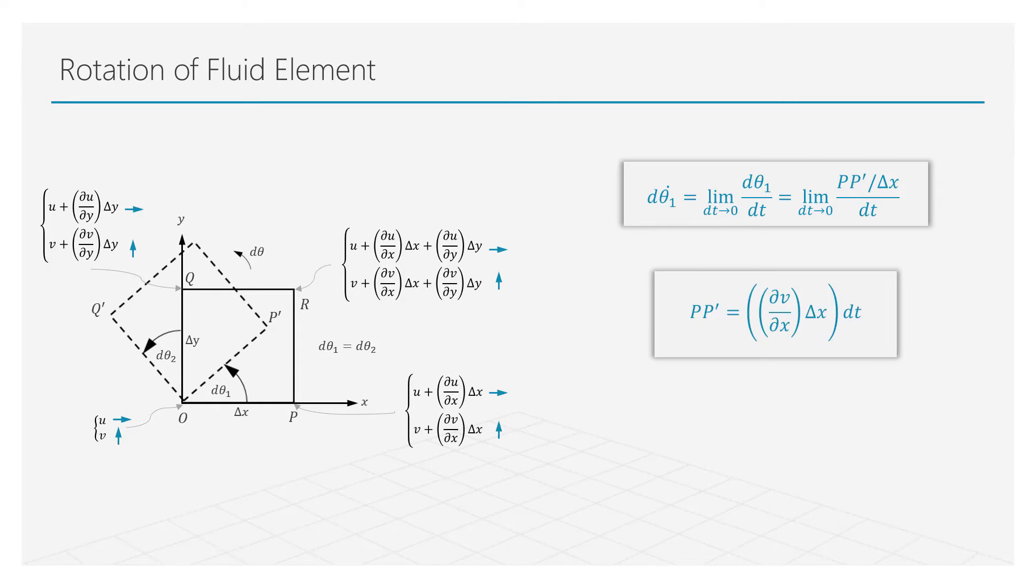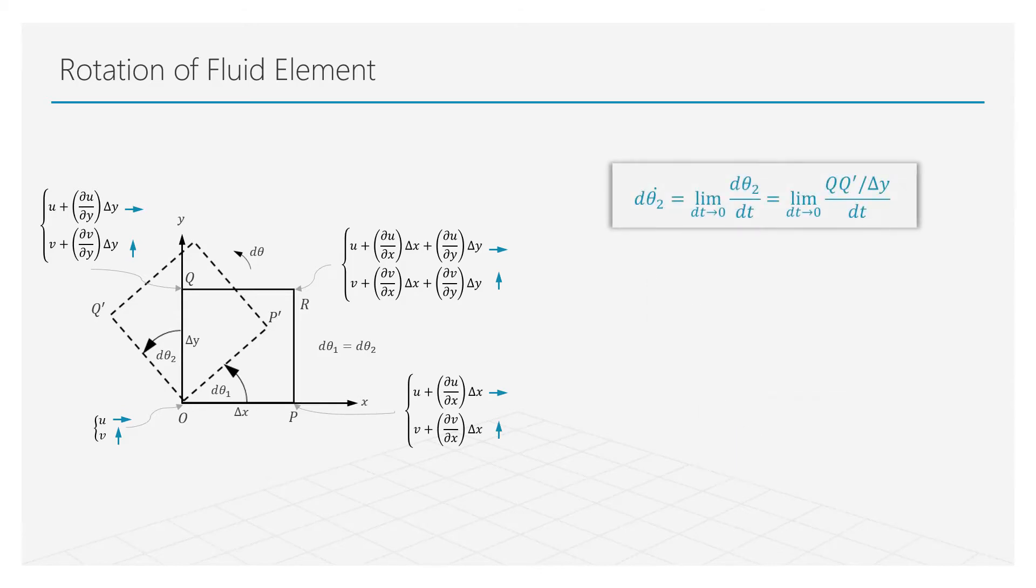As displacement occurs from p to p prime over a small time dt, we can write this displacement p p prime using the p component of velocity. When we replace p p prime, we obtain the final value of deformation per unit time for d theta 1. In a similar manner, displacement q q prime can be written for small time dt. Following a similar approach, we can arrive at deformation per unit time for d theta 2.